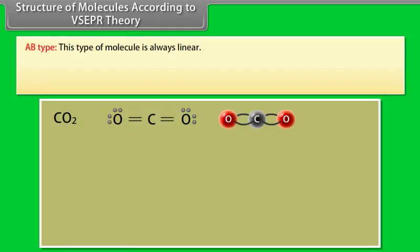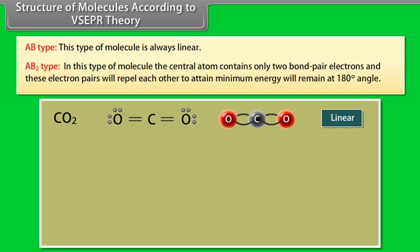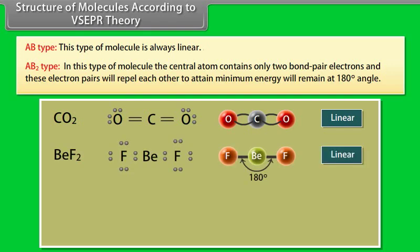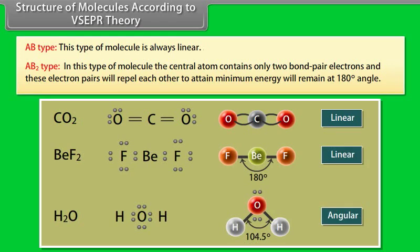Structure of molecules according to VSEPR Theory. AB type molecules are always linear. AB2 type: the central atom contains only two bond pair electrons and these electron pairs repel each other to attain minimum energy, remaining at a 180-degree angle.